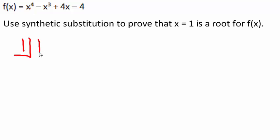1x to the 4th minus 1x cubed. Be careful here, there's a plus 0x squared and we need to hold the space for the x squared term that isn't there. And then plus 4x, and then minus 4 is our constant at the end.